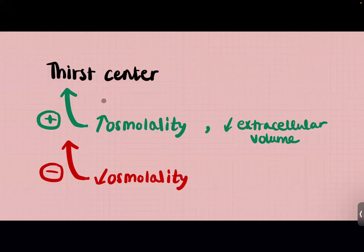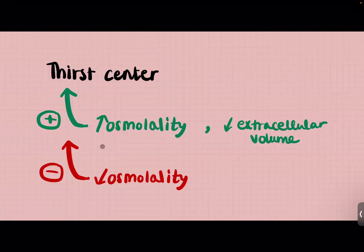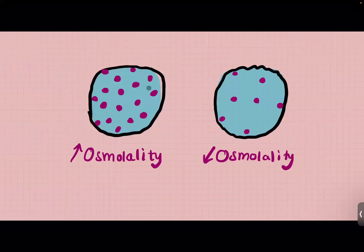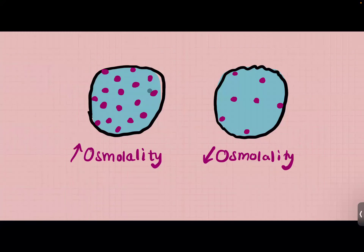Now let's talk about the thirst center. The thirst center has osmoreceptors — basically sensors that sense the osmolality of your plasma. If your osmolality increases, you will stimulate the thirst center; if it decreases, you inhibit it. Osmolality is a measure of the concentration of dissolved particles in fluid. High osmolality means high concentration — concentrated — and low osmolality means dilute.